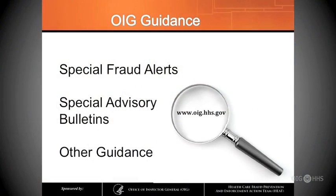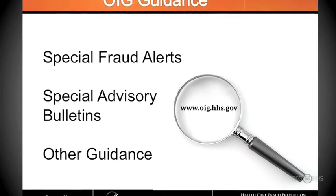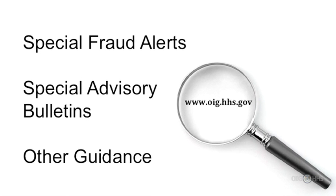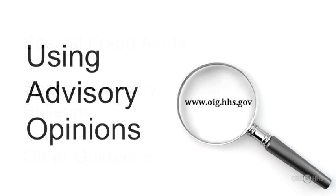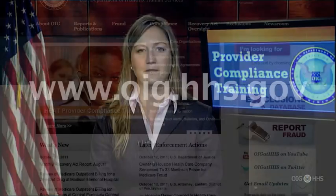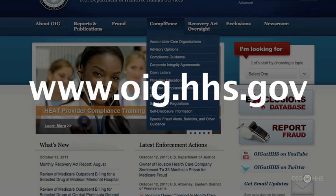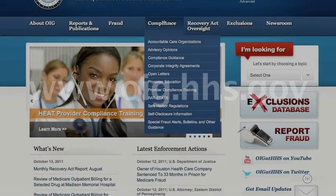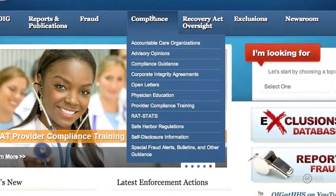Next, there's more specific information highlighting particular areas of fraud and abuse. These are the special fraud alerts, special advisory bulletins, and other guidance. And finally, we'll look at advisory opinions and explain how they can be used. All of these materials are posted on our website, www.oig.hhs.gov. Just click on the compliance tab on our homepage.